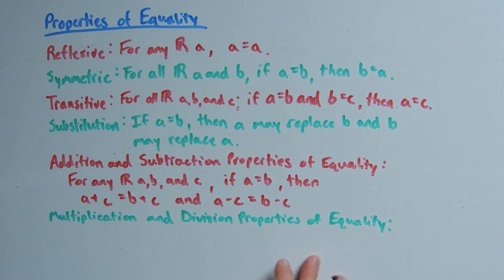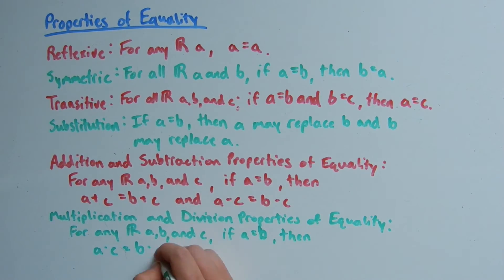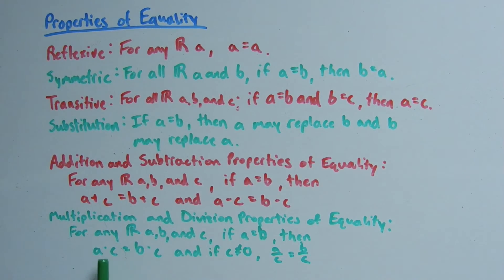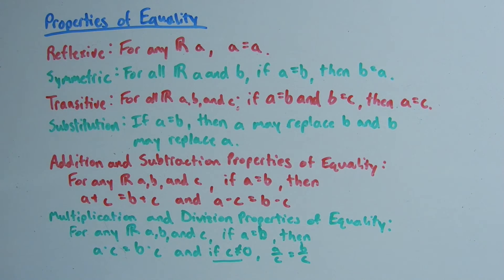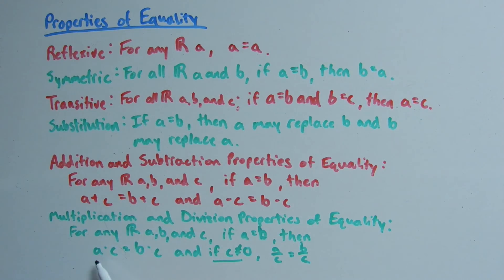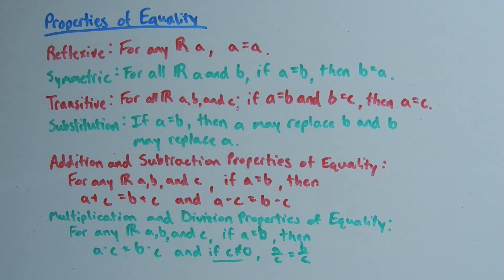We also have multiplication and division properties of equality, which say that for any real numbers a, b, and c, if a equals b, then a times c equals b times c, and a divided by c equals b divided by c. For the division case, remember c cannot equal zero because then the fractions would be undefined. Now that we've done a quick review of the properties of real numbers and properties of equality, we're ready to jump into solving equations, and I'll give you a few tips and refreshers in the next video.